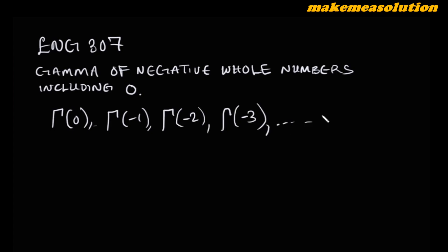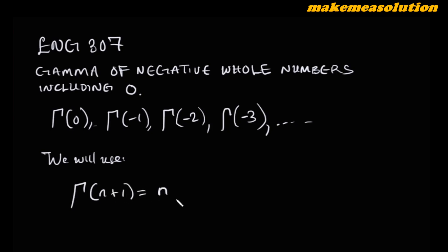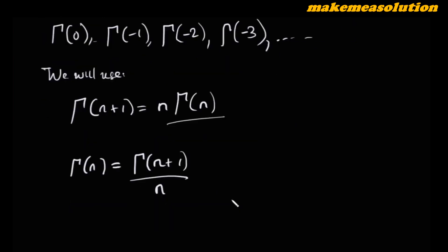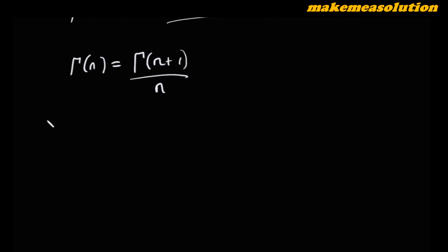We are going to use this recursive relation: gamma of n plus one is equal to n times gamma of n. This is the recursive relation we're going to use. If you make gamma of n the subject of the formula, you get gamma of n equals gamma of n plus one divided by n.